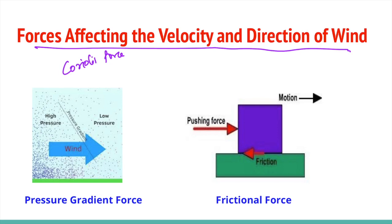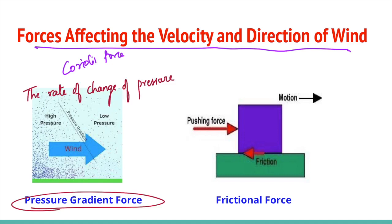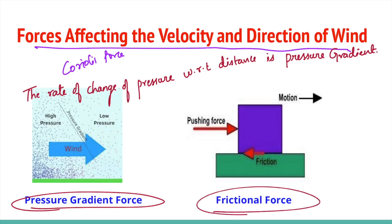Pressure gradient force: the difference in atmospheric pressure produces a force. The rate of change of pressure with respect to distance is the pressure gradient. The pressure gradient is strong where isobars are close to each other and weak where isobars are far apart.